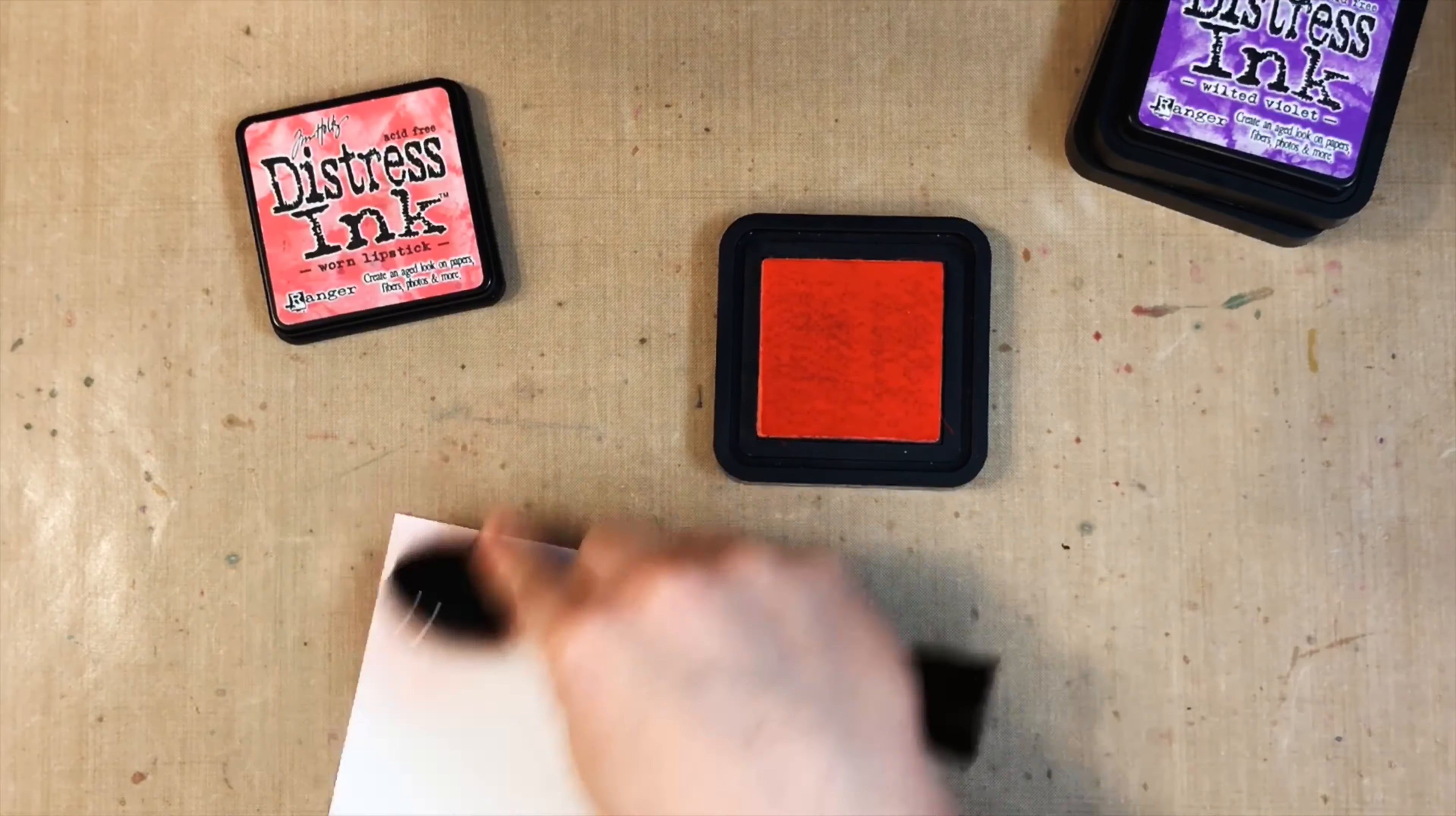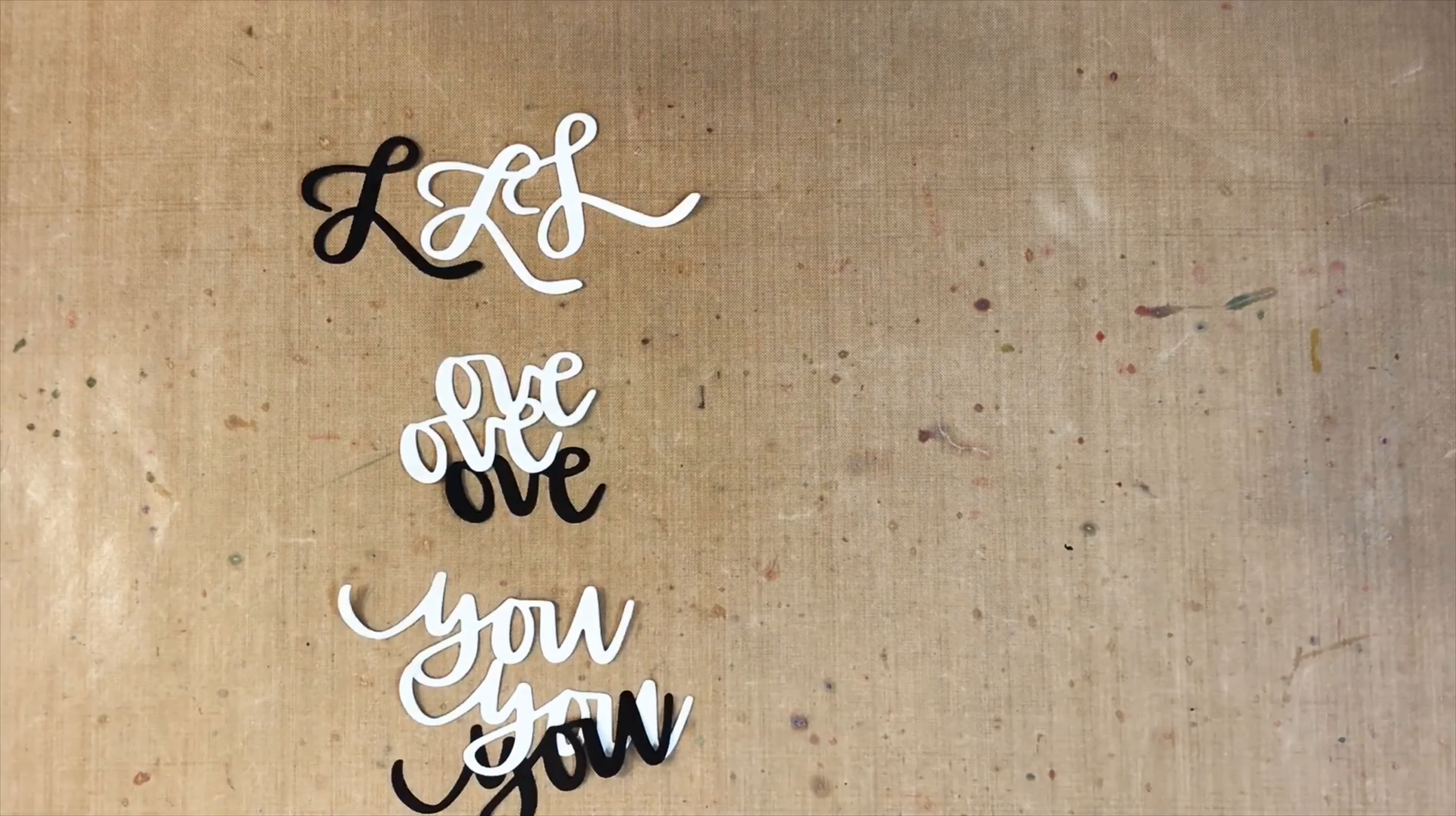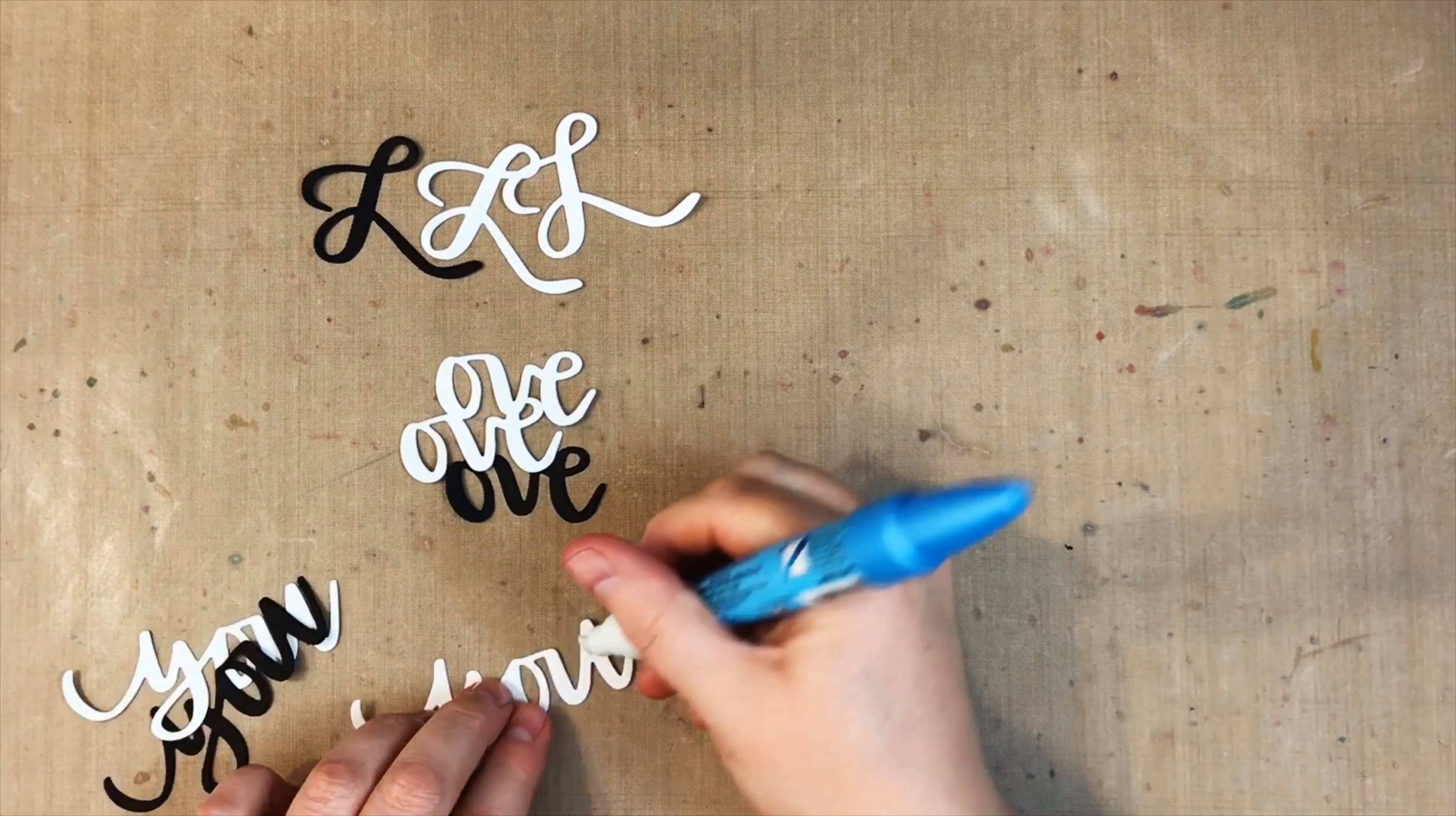I've set that background aside, then I need a big heart, so I'm just ink blending on some more cardstock on a little scrap and then die cutting that heart.